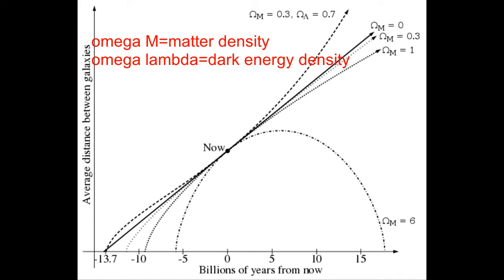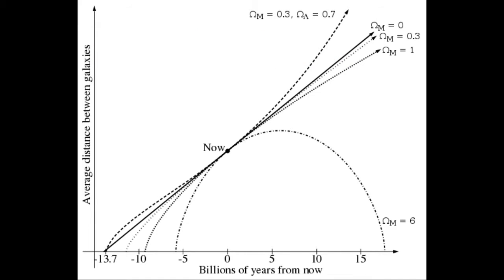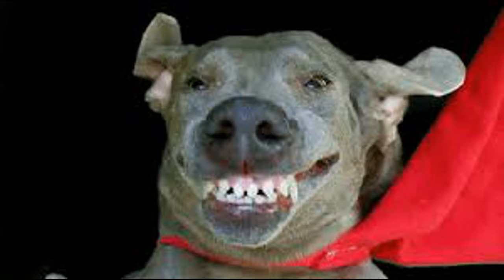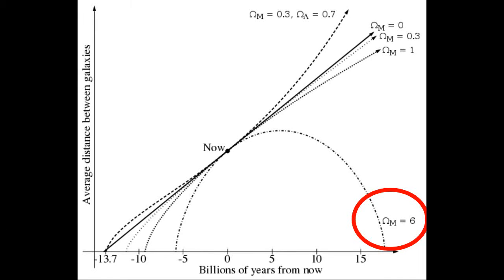There's this amazing chart that I found on Wikipedia that basically explains what I was going to say in this video. So basically, if matter is denser — one density being normal — then the universe will start to shrink.